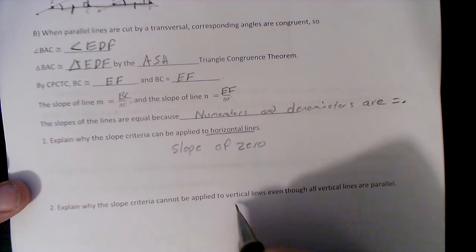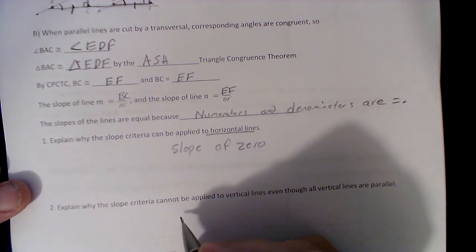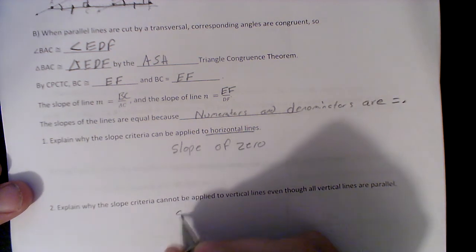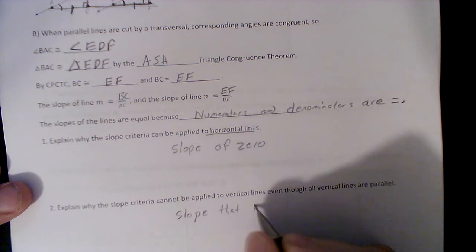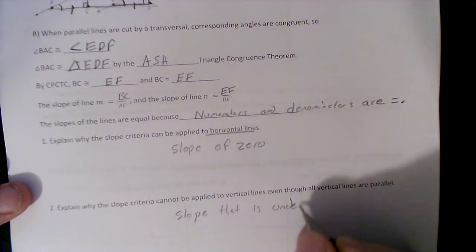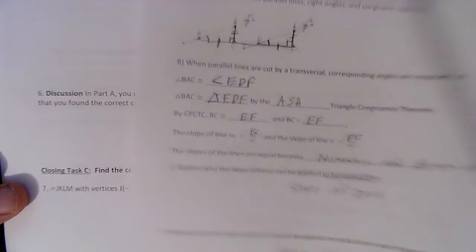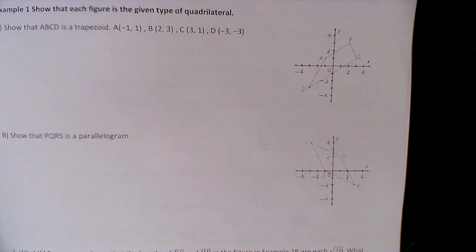Explain why slope criteria cannot be applied to vertical lines. Well, because they have a slope that is undefined. And I'm going to end this one. There's the first page, kind of an explore activity to go on. And we're going to come back and go here. Talk to you soon.